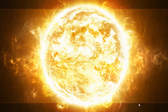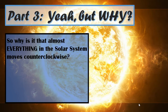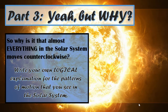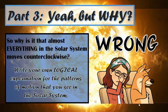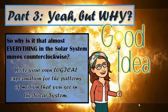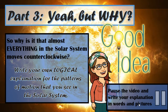Continuing with part three, called 'Yeah, But Why?' My question to you is: why is it that almost everything in the solar system moves counterclockwise? I want you to write your own logical explanation for the patterns of motion you see. I did not say I want the correct explanation — I want you to use your brain to come up with a logical explanation. Please don't Google this. I'm looking for a really good idea — what your brain comes up with on its own. Please pause the video and write your logical explanation in words and pictures for part three in your notebook.